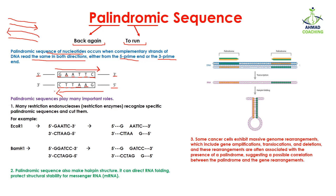Palindromic sequences play a very important role in the cell. First of all, many restriction endonucleases, or restriction enzymes, recognize specific palindromic sequences and cut them. We use this ability of restriction endonucleases in the cloning of particular genes. For example, an enzyme known as EcoRI is a restriction enzyme that recognizes the sequence G-A-A-T-T-C. Reading from one strand or the other, they both have the same sequence.